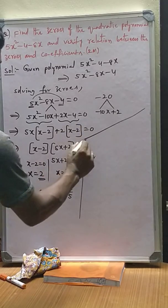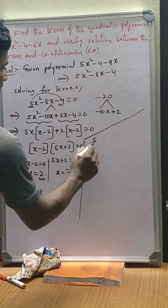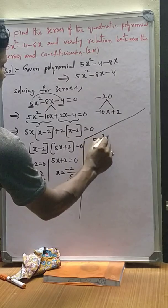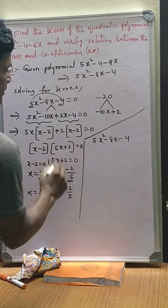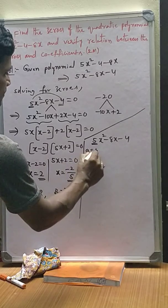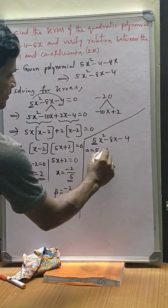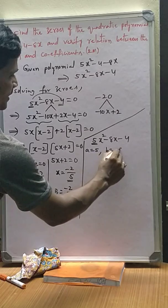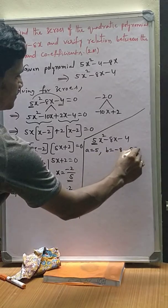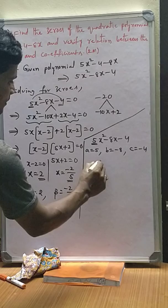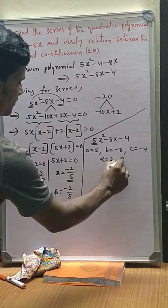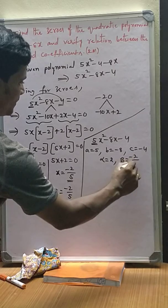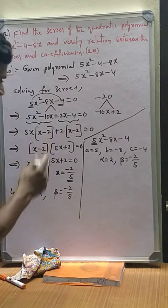Here, the polynomial is 5x² - 8x - 4. For this polynomial, a = 5, b = -8, and constant c = -4. And the zeros are α = 2, β = -2/5. Now, let us take sum of the zeros.